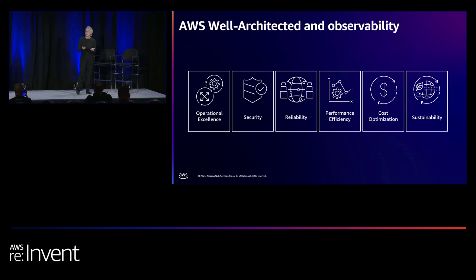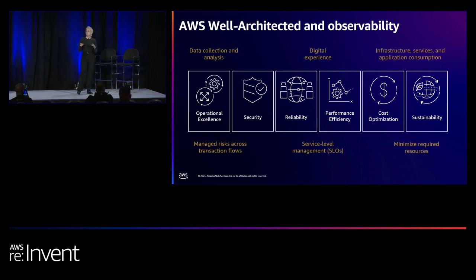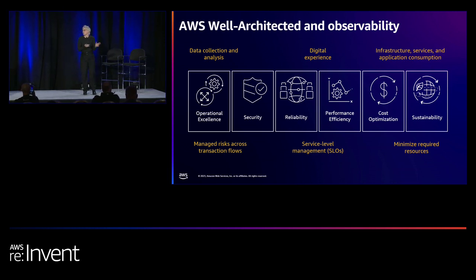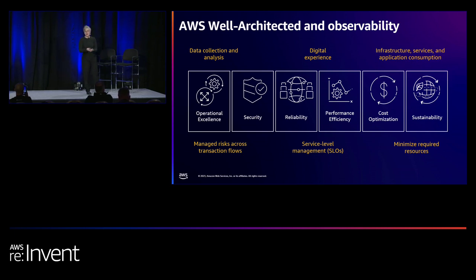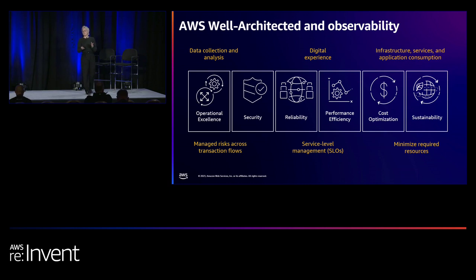From a how-does-Dynatrace-fit-into-this perspective — as Matt said, we're really the observability layer, whether we're talking about performance, availability, or security. We have to understand what's going on in our AWS environment: what are our transaction flows, what are the risks — performance, reliability, security. We have to understand the digital experience for our end users and how that maps to SLOs, and ultimately minimize required resources to stay within cost constraints.